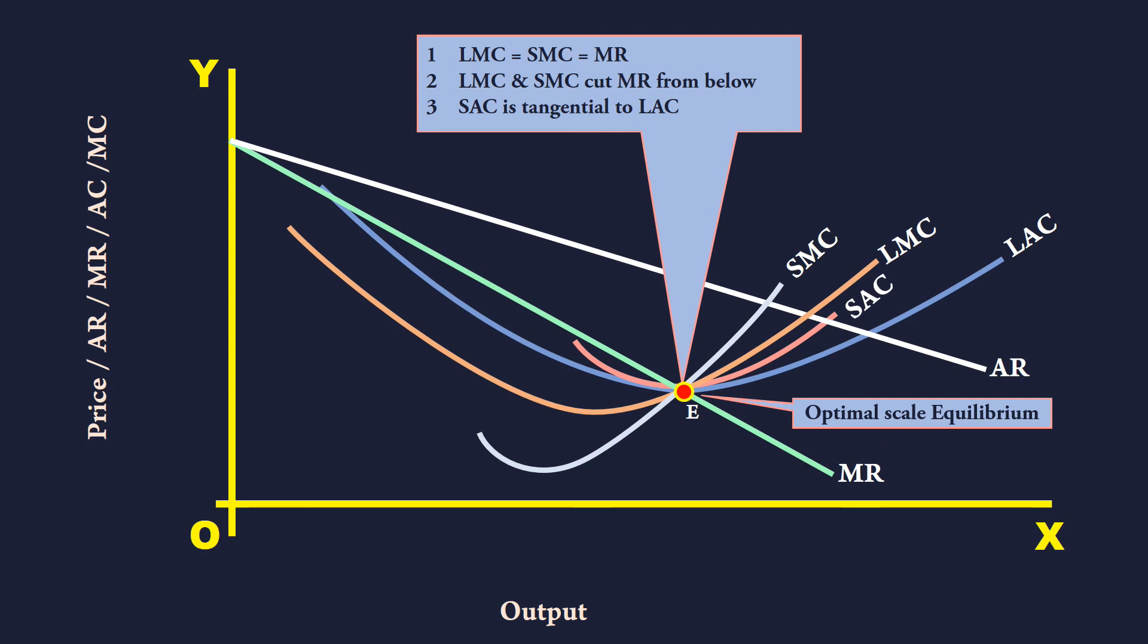Not only that, the firm uses its optimum productive capacity or full productive capacity of its plant. The firm enjoys the economies of scale in full. Hence, the firm is said to be in optimal scale equilibrium.